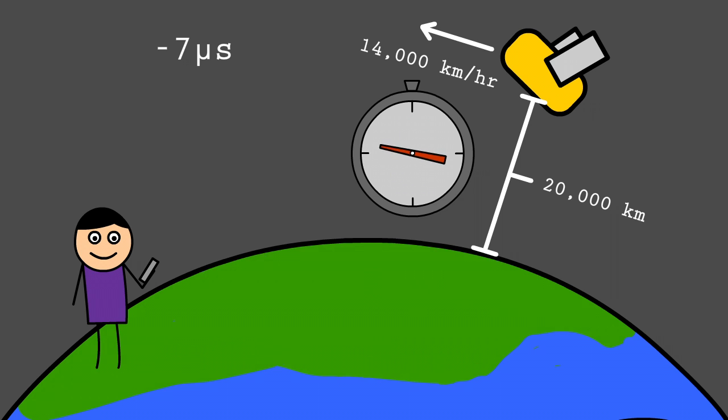Due to the farther distance from the center of the earth, general relativity predicts that we should see the clocks in the satellites gain 45 microseconds per day, a net difference of 38 microseconds.